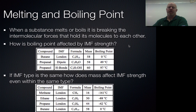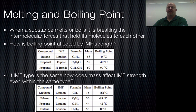We're going to focus on how boiling point is affected by intermolecular force strength. If we take a look at this graph, we see we have butane, propane, and propanol, and they have different types of intermolecular forces: London dispersion, dipole-dipole, and hydrogen bonding. The masses are relatively the same, so that should not affect our results too much.